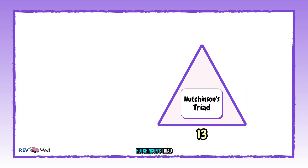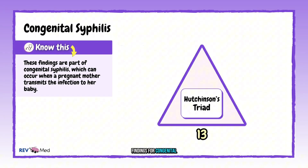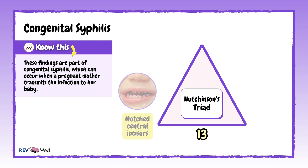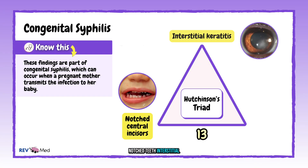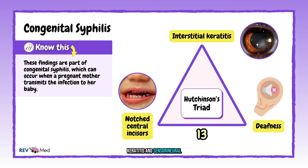Number thirteen: Hutchinson's triad — findings for congenital syphilis: notched teeth, interstitial keratitis, and sensorineural deafness.